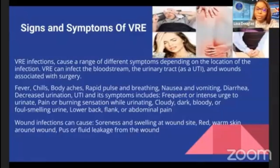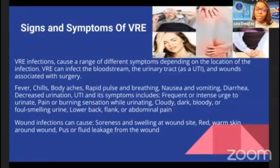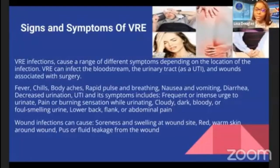UTI symptoms include frequent or intense urge to urinate, pain or burning sensation while urinating, cloudy, dark, bloody, or foul-smelling urine, and lower back, flank, or abdominal pain. Wound infection can cause soreness and swelling at the wound site, red warm skin around the wound, and pus or fluid leakage from the wound.